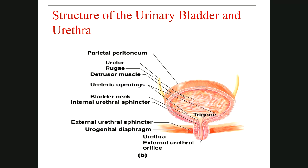This is the urethra in the female. The urethra in the female is very short, but still has three parts: one part inside the body, one part passing through the body wall, and one part outside. This wall of the body is called the urogenital diaphragm.